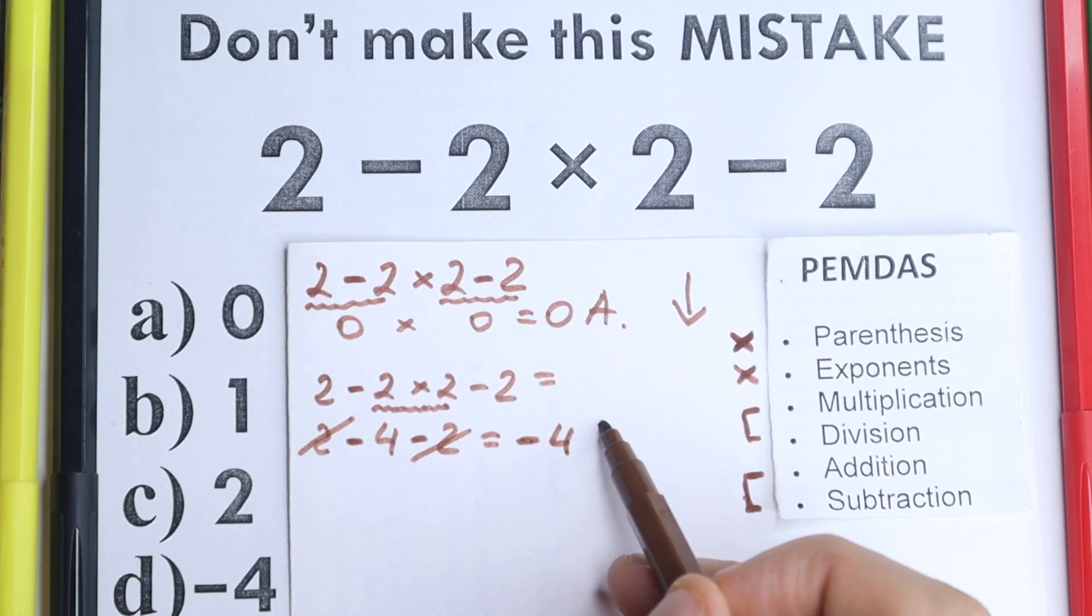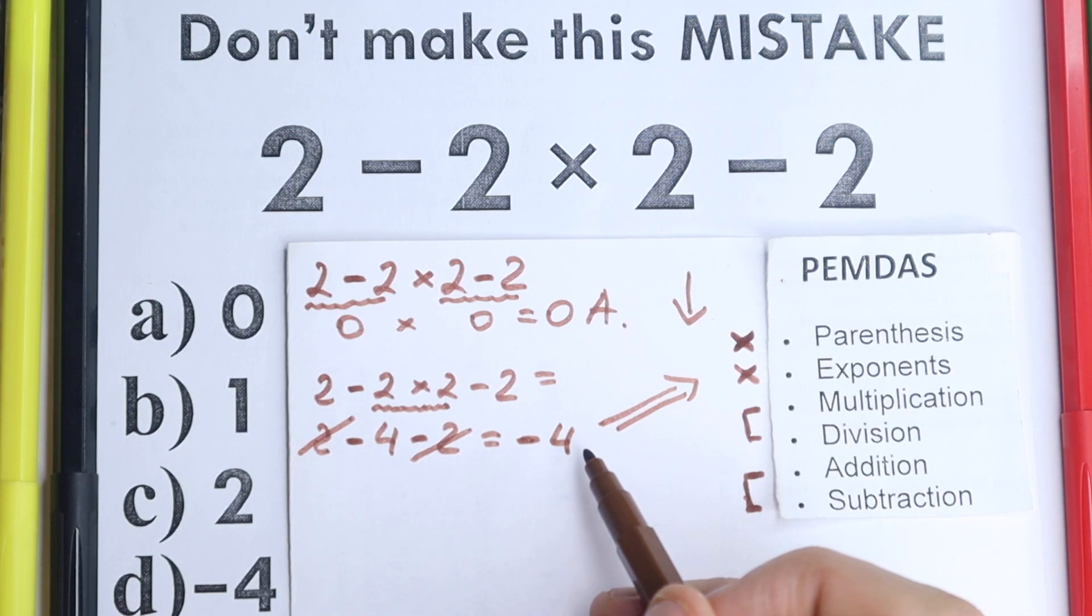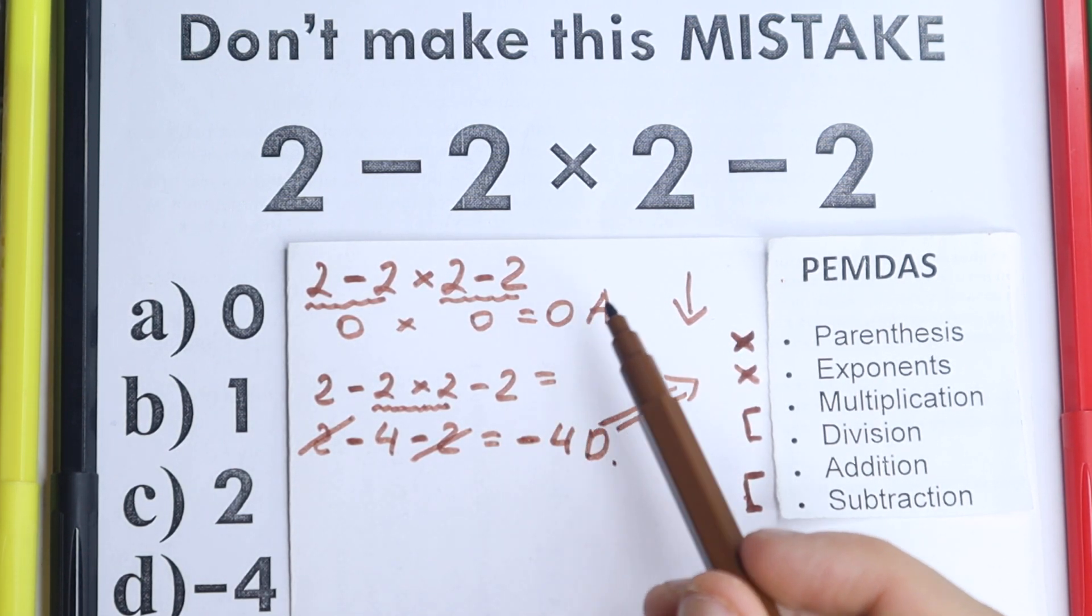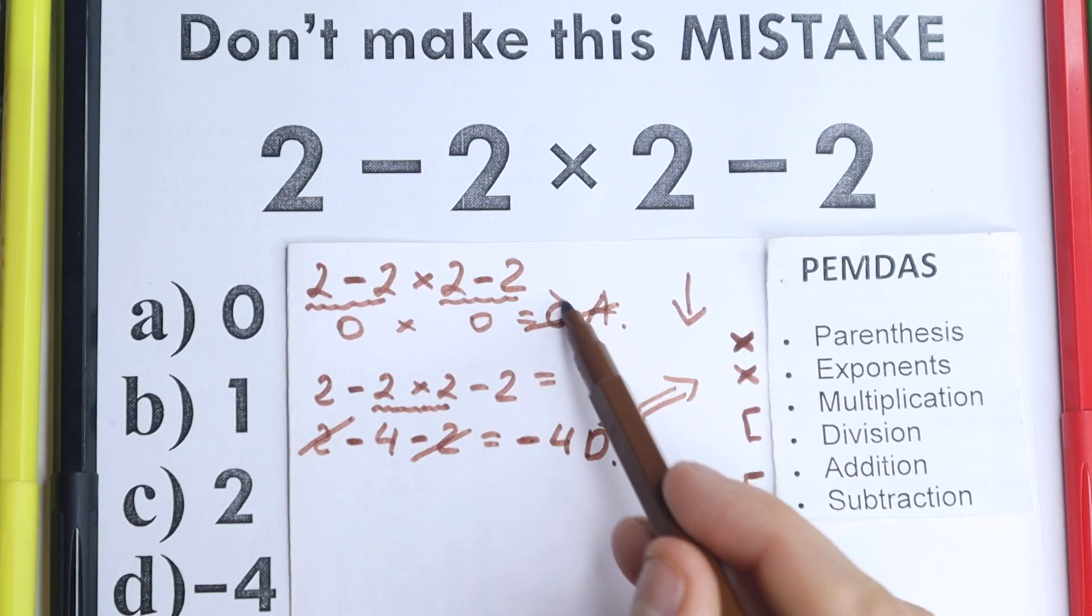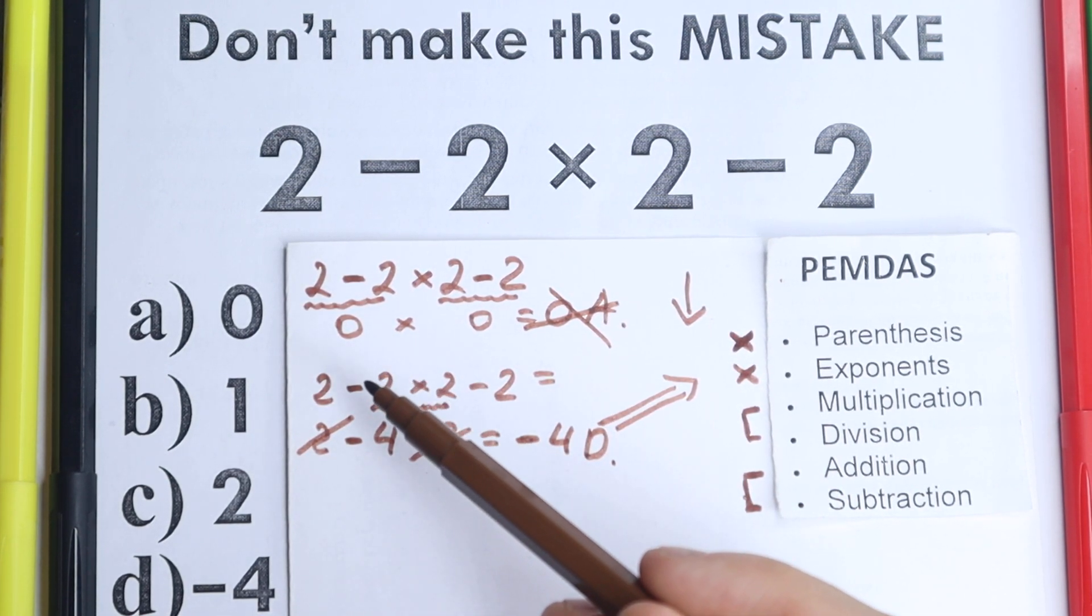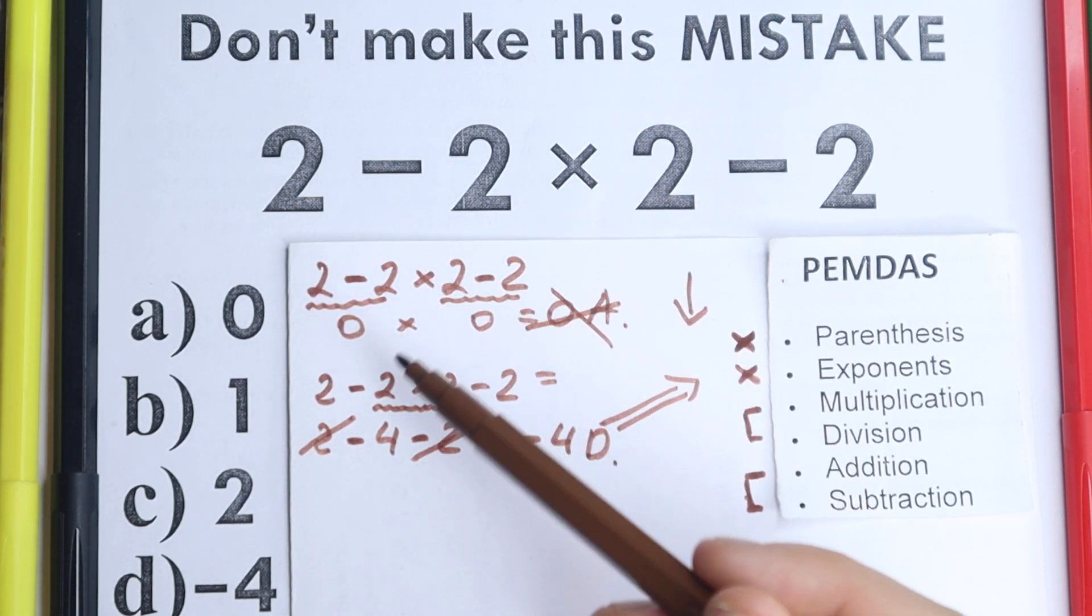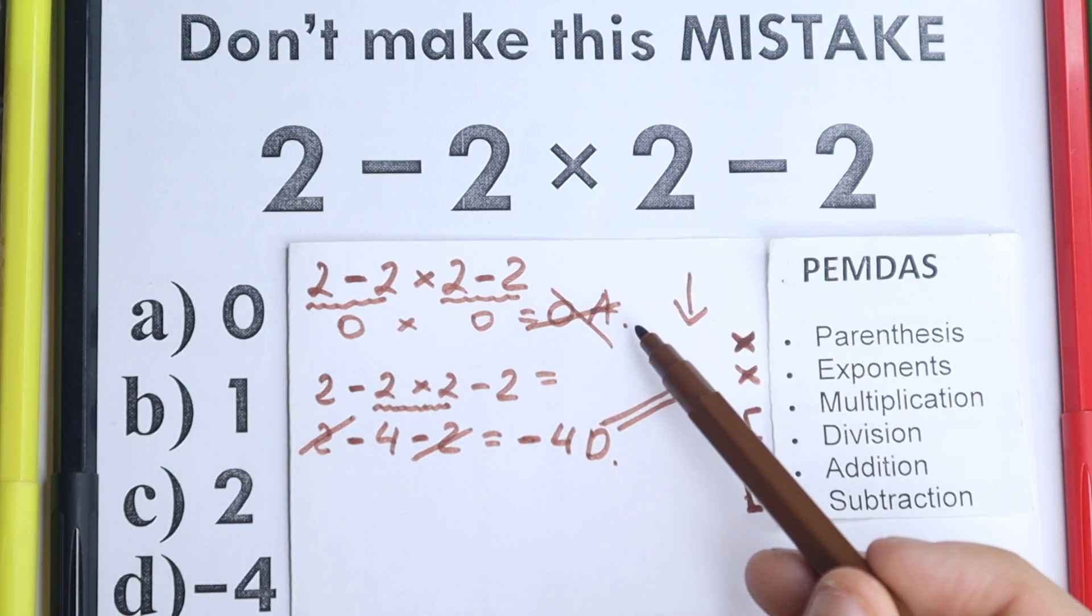So according to PEMDAS, if you're talking about order of operation, a correct order of operation, our correct answer is minus 4, this is option D. So right now, we can easily say that 0 is absolutely incorrect. Maybe a lot of students solve it like that, because they want to solve it in an easy way. They say, okay, 2 minus 2 equal to 0, then okay, the 0, this is a correct answer. But 0 is absolutely incorrect.